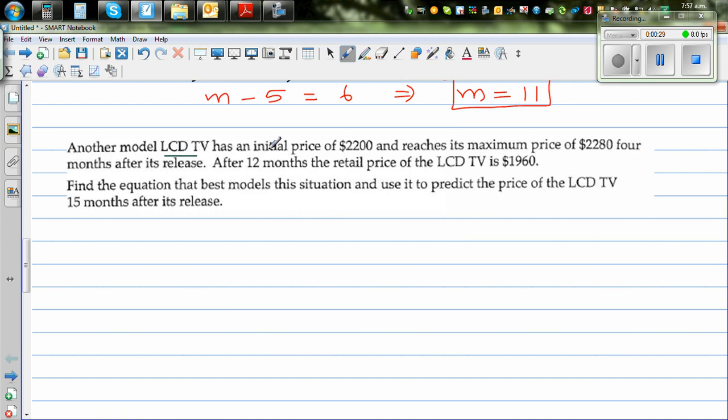Another LCD TV has an initial price of $2,200. So let's say C is the cost or the price, and N is the number of months. Let me make up a table so that you have the information. So N and C. When N was 0, the price is $2,200. So this is the initial price.